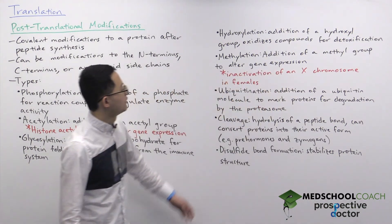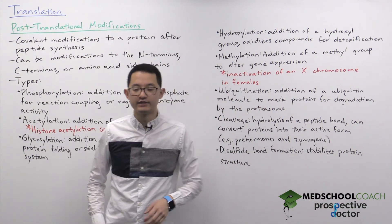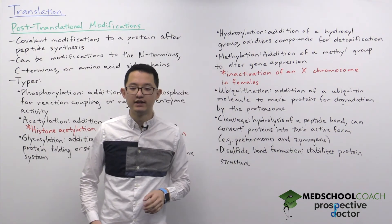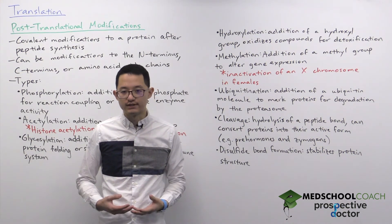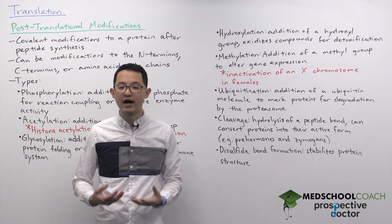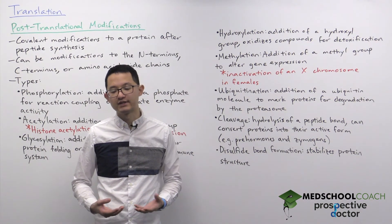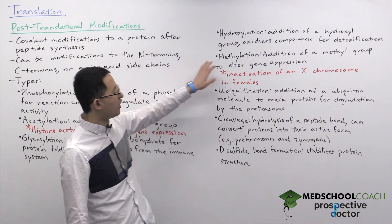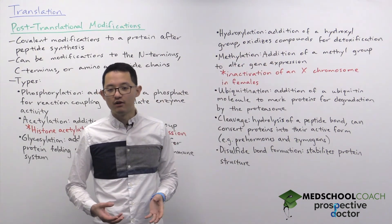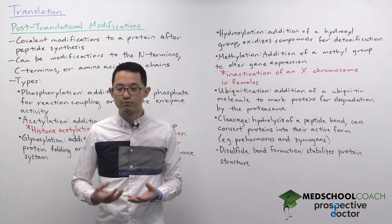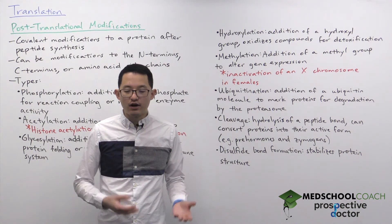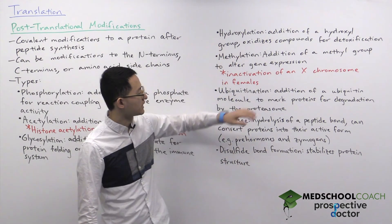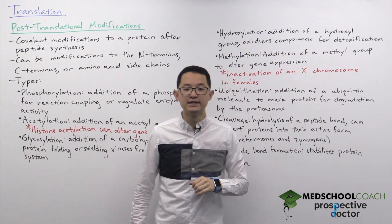Next we have hydroxylation, which is the addition of a hydroxyl group (an OH group). This is important for detoxification because many toxins that organisms encounter are hydrophobic. As hydrophobic compounds, they cannot be excreted in solution because they don't dissolve in water. Hydroxylation oxidizes the compounds, introducing the polar OH group, which allows the toxins to dissolve into water and be excreted. So hydroxylation oxidizes compounds for detoxification.